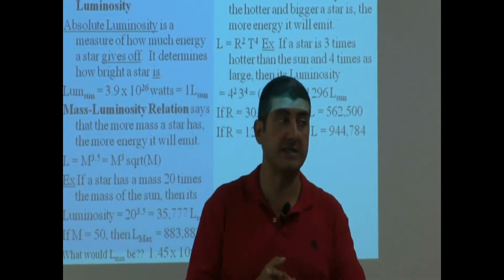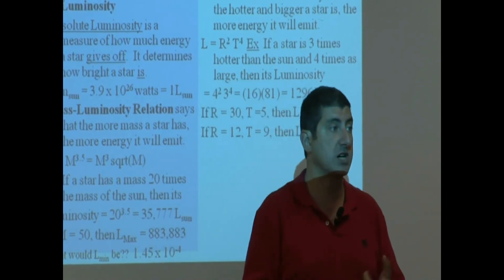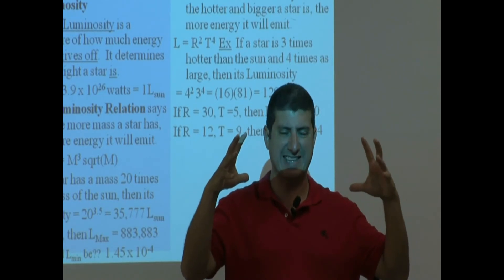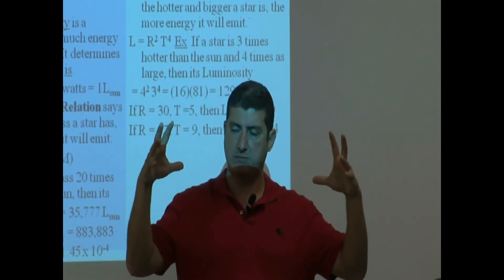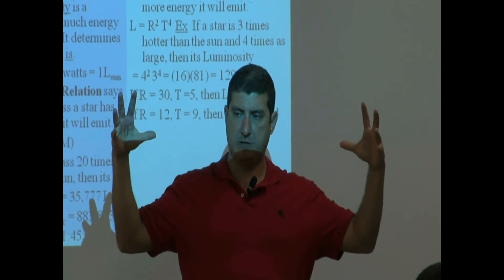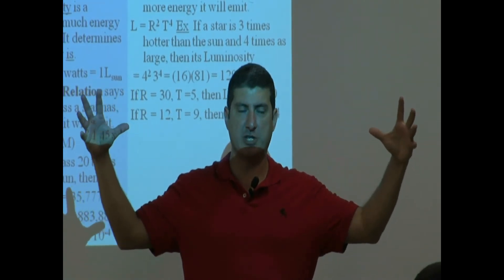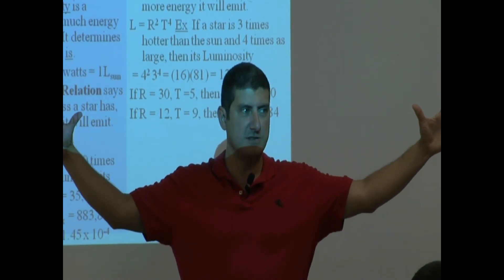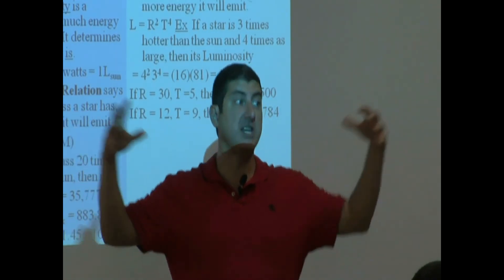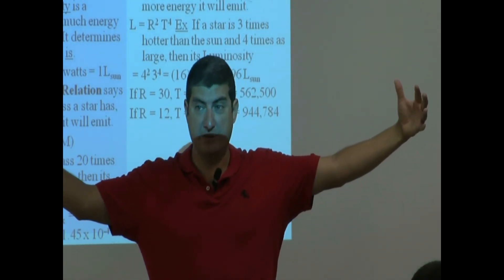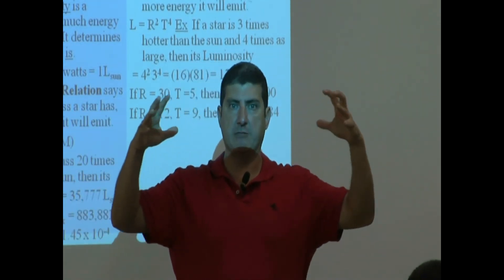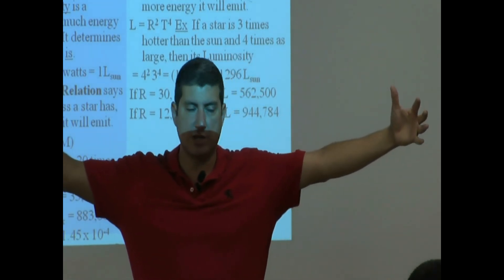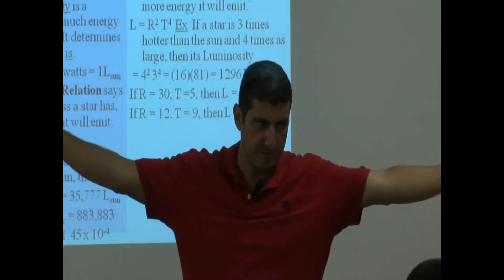One of the things we're going to find out in the next lecture when we talk about star evolution is this: when a star starts dying, it gets big — very big. But what happens to its temperature? It starts getting colder. So you can't both get big and hotter indefinitely. It gets bigger and bigger, but colder and colder. When it gets colder, what color does it appear? Red.